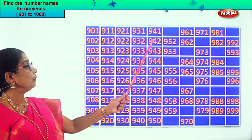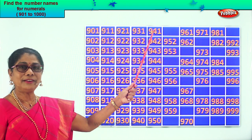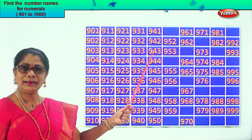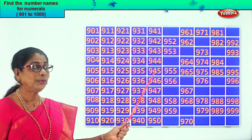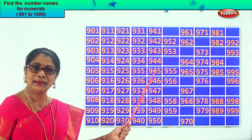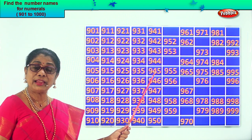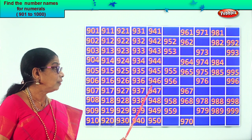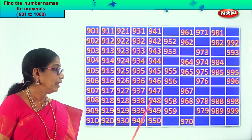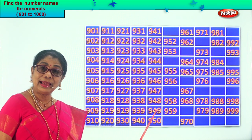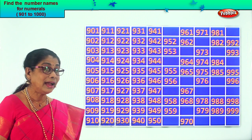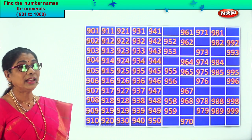Let's say together: 941, 942, 943, 944, 945, 946, 947, 948, 949, 950.